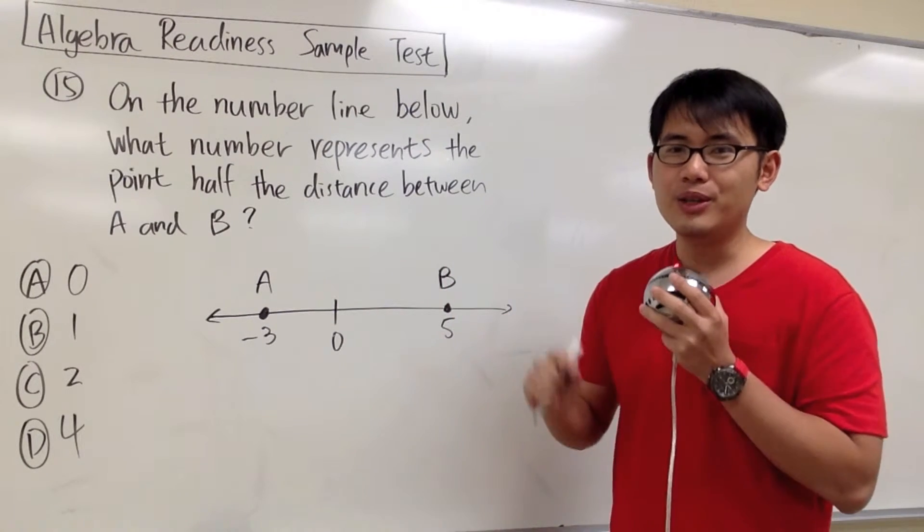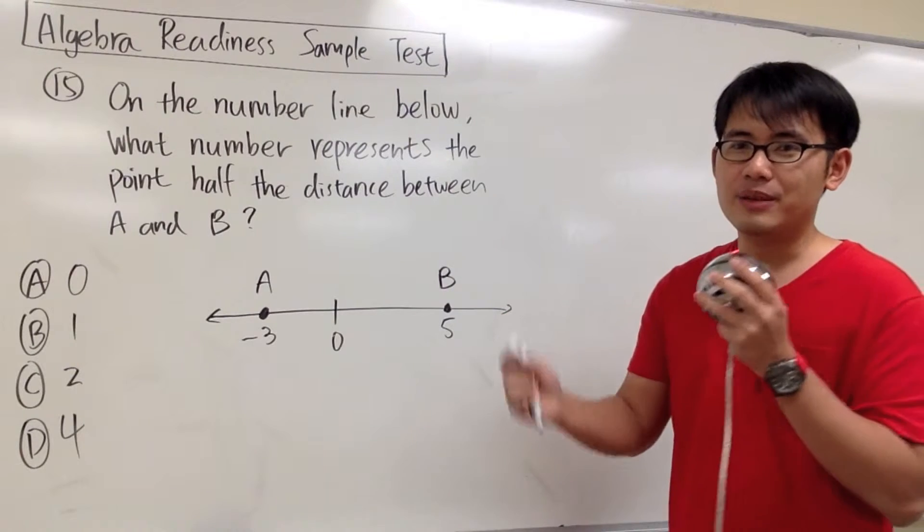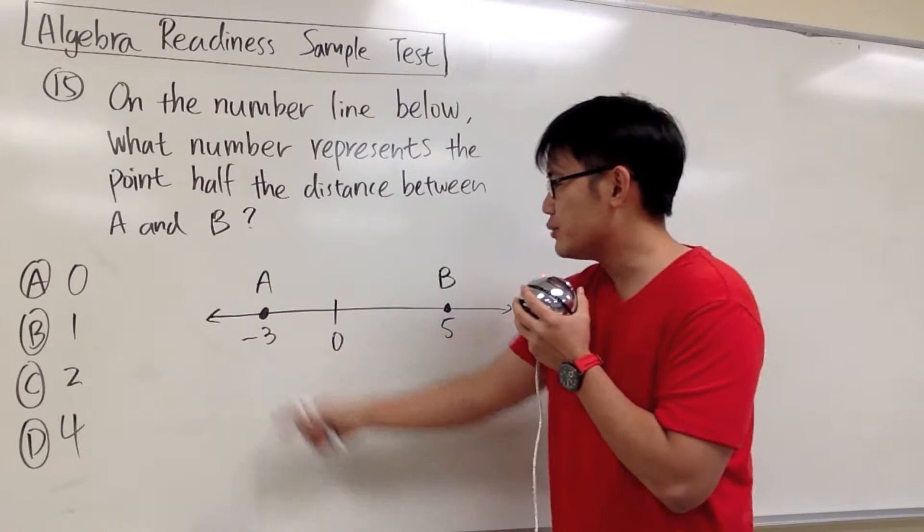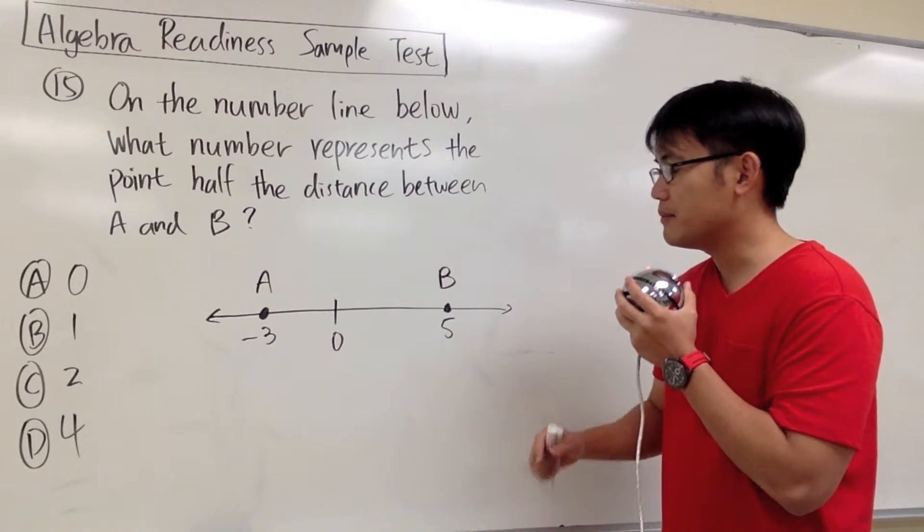That has to be the middle, right? This question is just asking us for the middle point. A is at negative 3, B is positive 5, where is the middle?